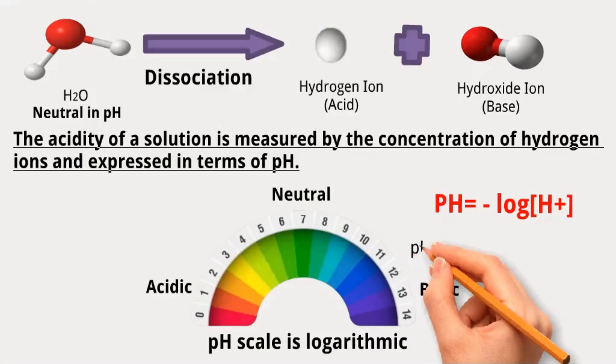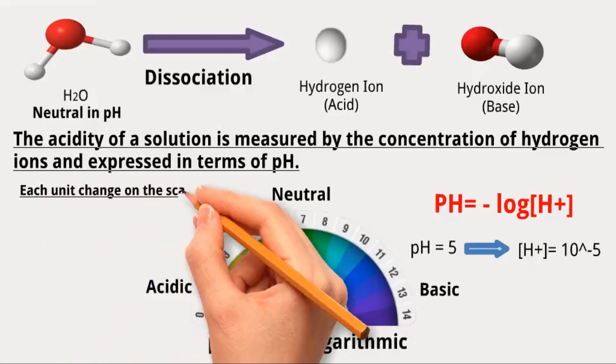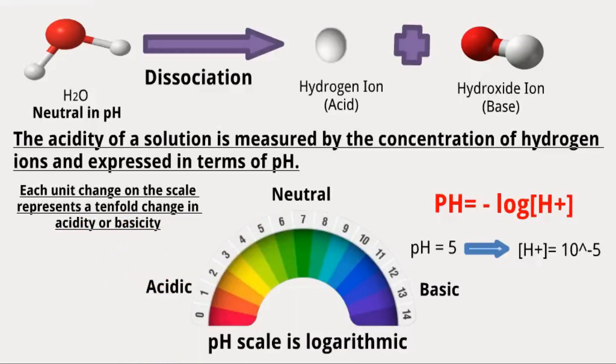For example, a solution having a pH of 5 contains a hydrogen ion concentration of 10 to the power of minus 5 molars. The logarithmic scale means that each unit change on the scale represents a tenfold change in acidity or basicity.